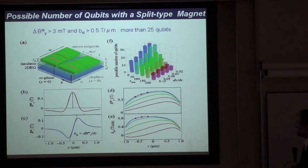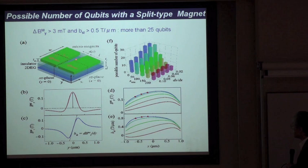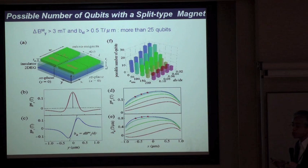If we extend this split-type micro-magnet technique to make multiple qubits, implemented by aligning multiple quantum dots in a row, we expect that we can obtain more than 25 qubits without any technical difficulty, in principle.